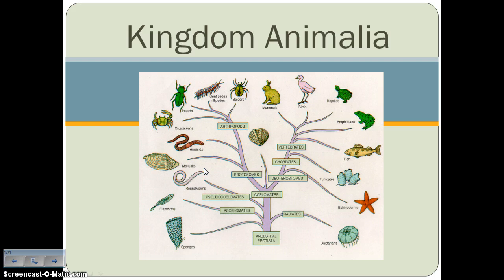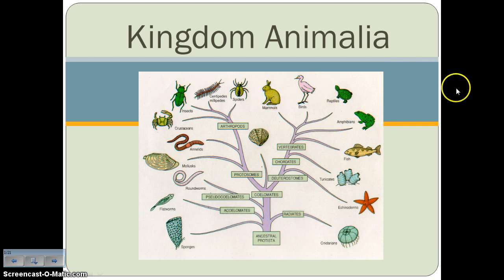On this first slide, I have an evolutionary tree or evolutionary history of Kingdom Animalia. When we think of animals, we typically think of something that falls in one of these categories: fish, amphibians, reptiles, birds, or mammals — in other words, a vertebrate. But as you can see, there's really a lot more to this kingdom than those animals we're so familiar with.